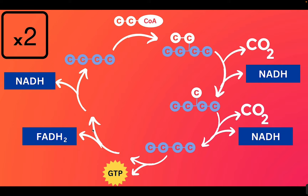At the end of these steps, it goes back to its original structure to pick up another acetyl-CoA. Remember, all of the numbers you see would be multiplied by two to get the total result. So at the end of this cycle, you have actually produced six NADHs, two FADH2s, and two GTPs.